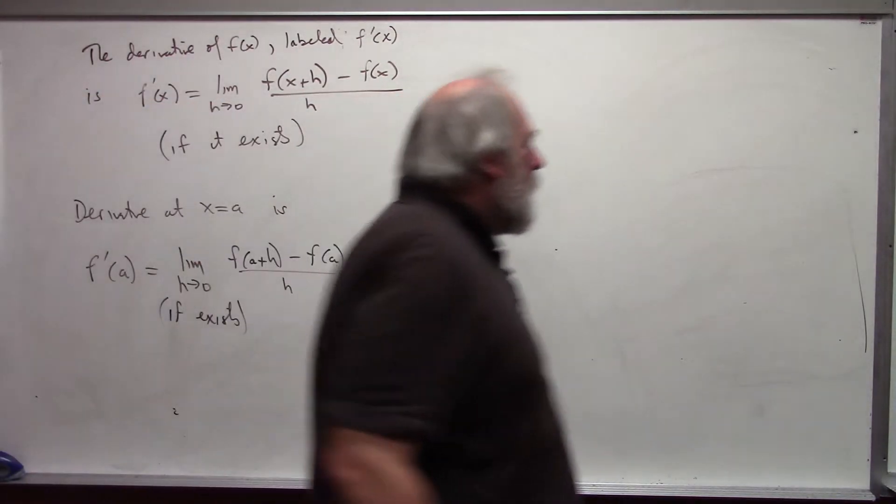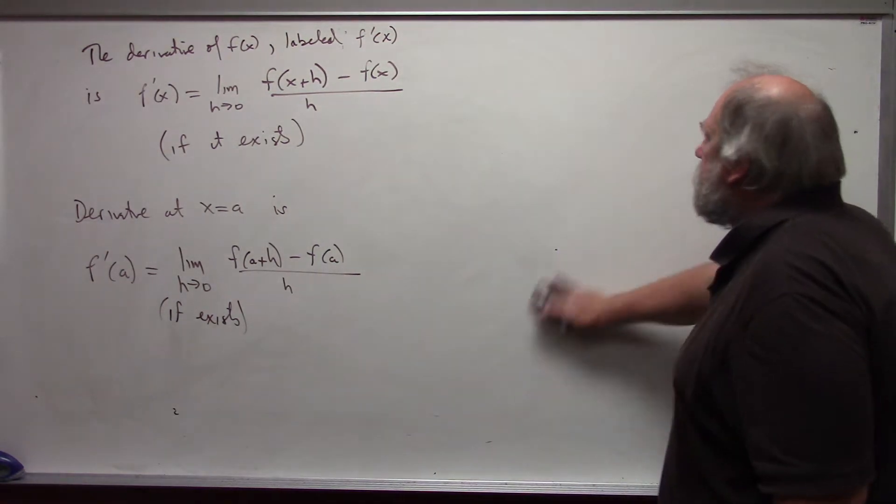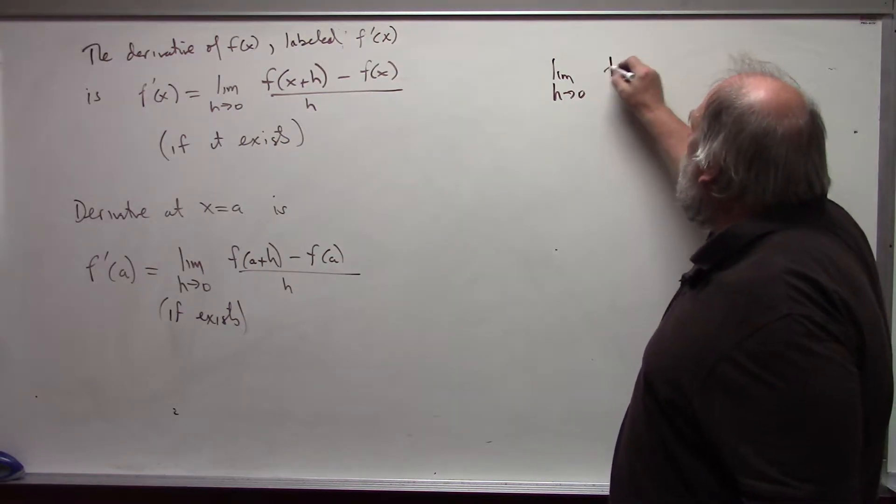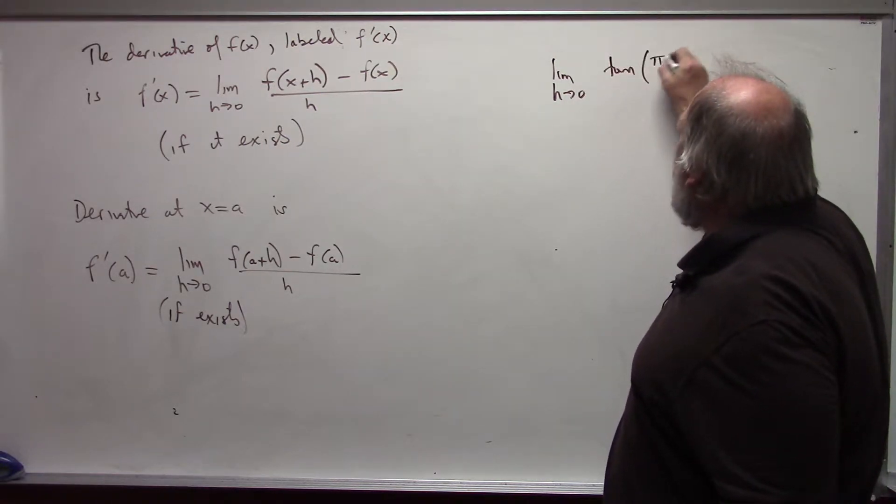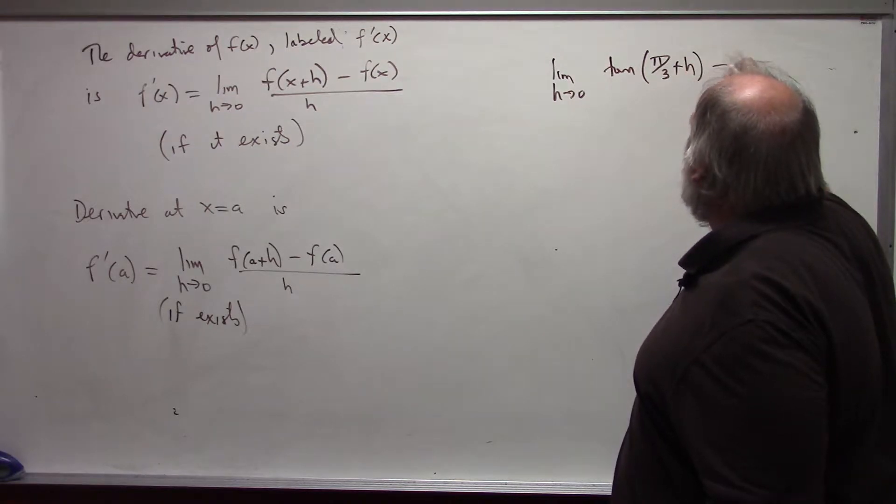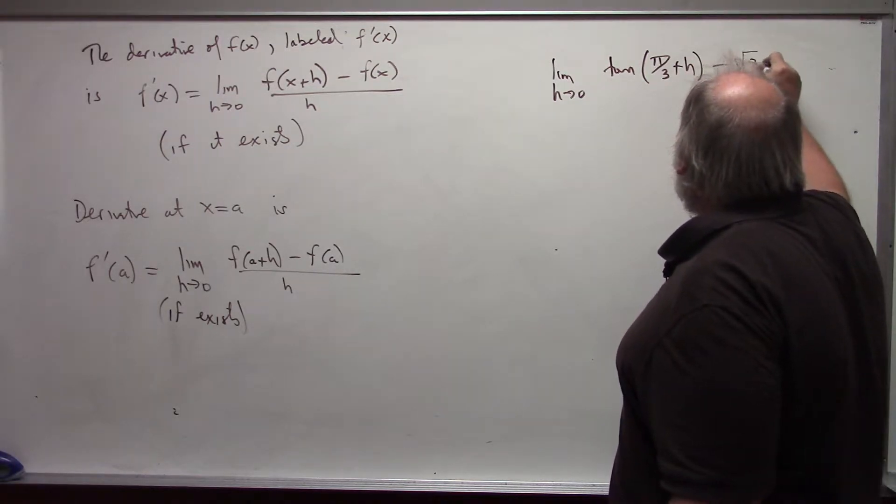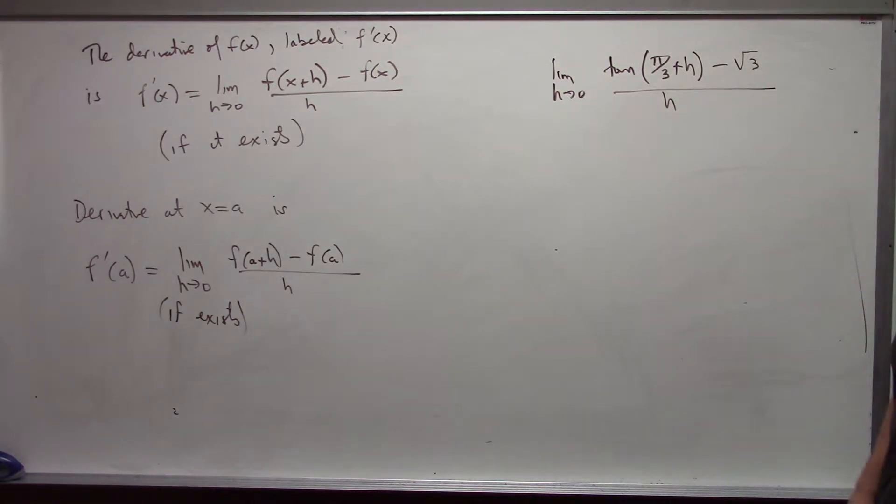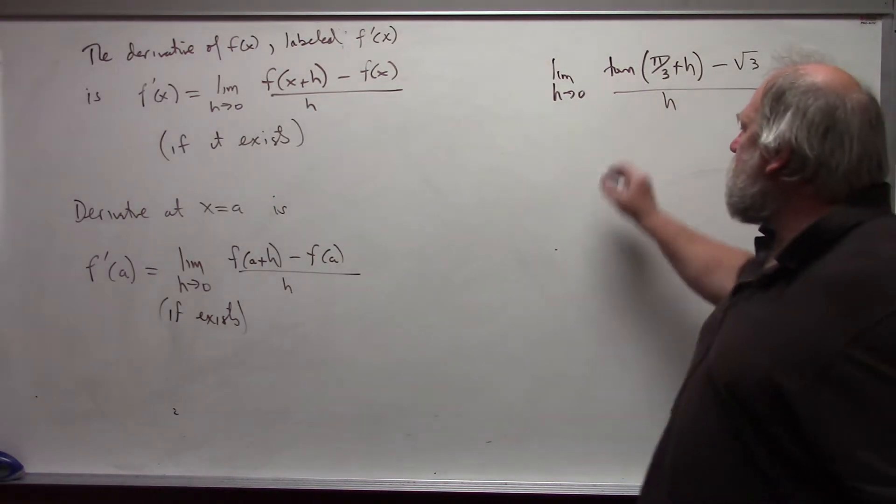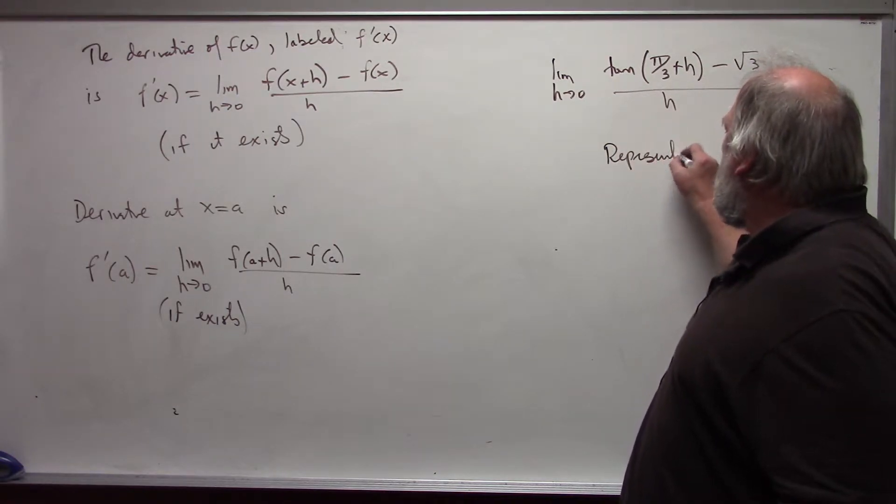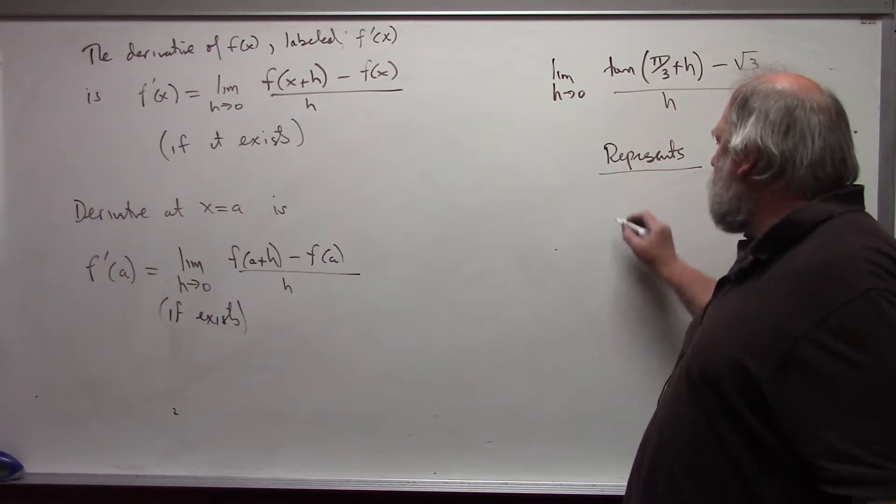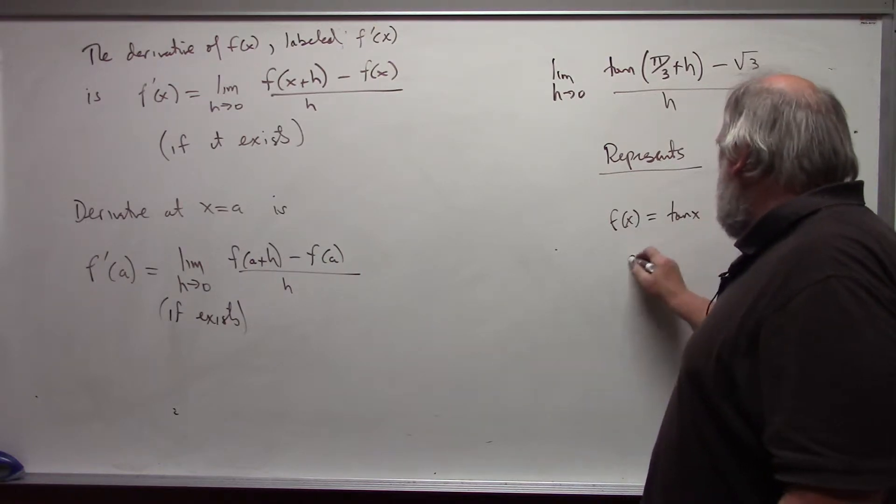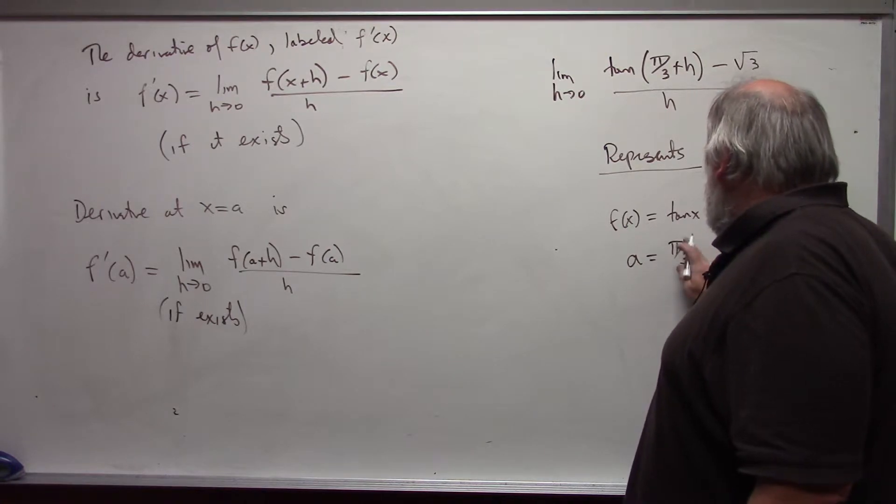So for example, if I have the limit as h approaches 0 of the tangent of pi over 3 plus h minus the square root of 3 all divided by h, this limit represents the function f of x being tangent of x and the value of a being pi over 3.